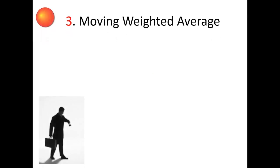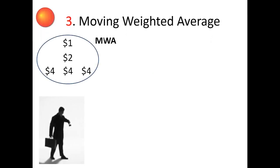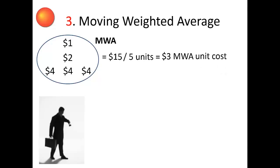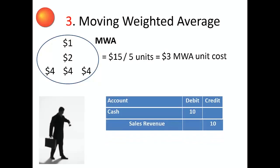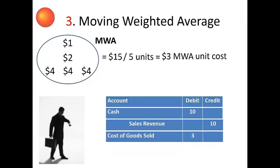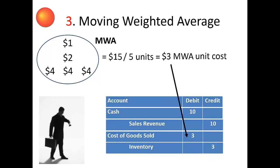Moving Weighted Average. Just before each sale, management takes the total cost of all inventory on hand – $15 – and divides it by the total number of units on hand – 5 units – to arrive at a weighted average unit cost of $3. That weighted average unit cost becomes the unit cost expensed. Journal entry: debit cash $10; credit sales revenue $10; debit cost of goods sold $3 (the average cost of the one unit sold); and credit inventory $3.